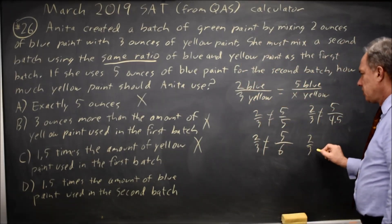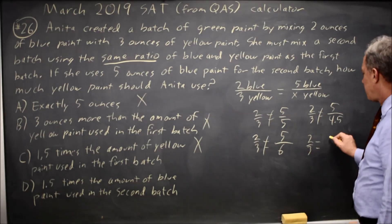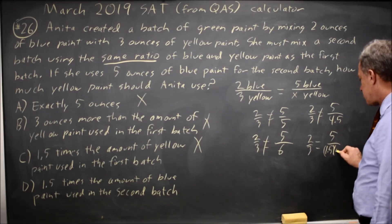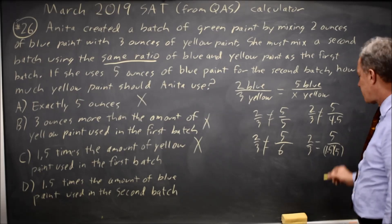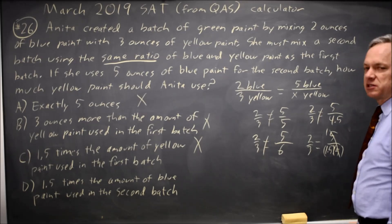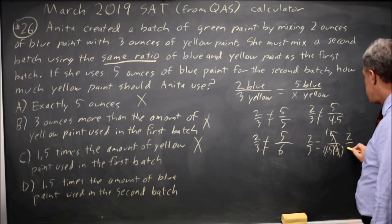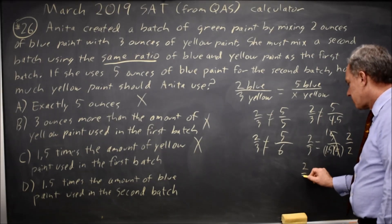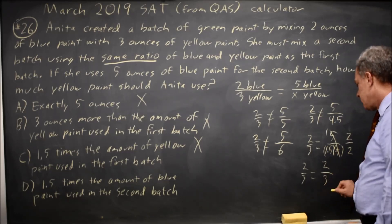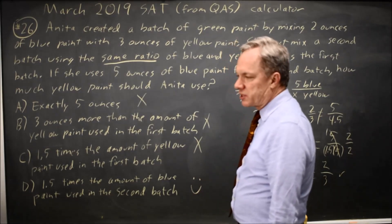2/3, 2 blue over 3 yellow in the first batch. We want the same ratio and we have 5 over 1.5 times 5. 1.5 times the amount of blue in the second batch. 5 over 5 is 1. So the question is, is 2/3 equal to 1/1.5? I can verify that on my calculator or I can multiply by 2/2 and 2/3 equals 1 times 2 is 2. 1.5 times 2 is 3. So yes, that works. Choice D would be the correct answer.